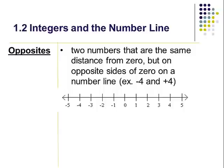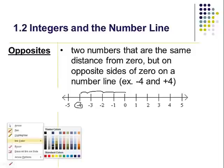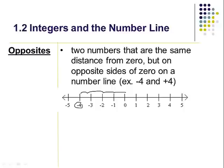In addition to absolute value we also talk about opposites. I like to think about these as being twins just on the other side of zero on the number line. The definition is: two numbers that are the same distance from zero but on opposite sides of zero on the number line. So negative four is one, two, three, four steps to the left, and positive four is one, two, three, four steps to the right — they're the same distance from zero, just on opposite sides.